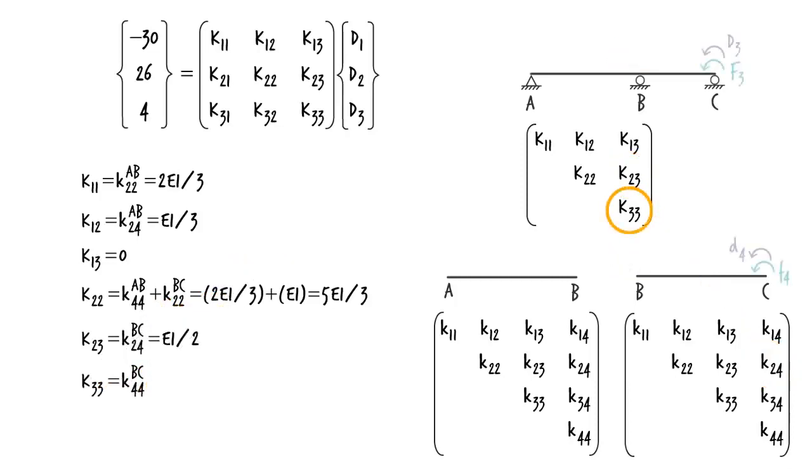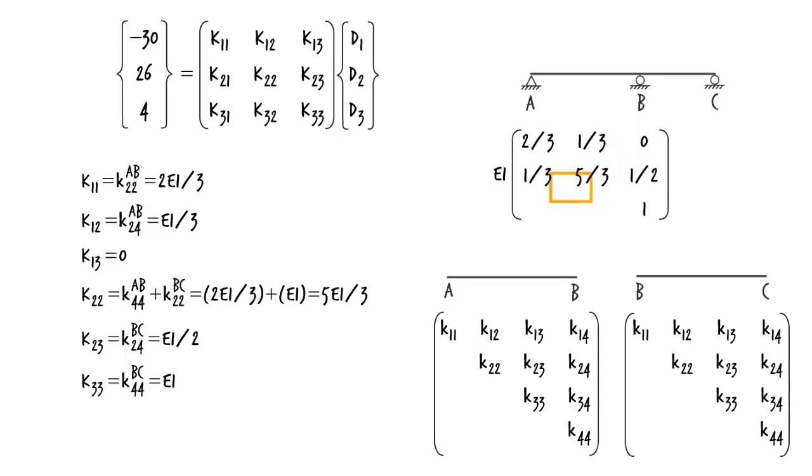And K33 equals K44 of BC, or EI. Therefore, the upper part of the matrix looks like this. Since stiffness matrices are always symmetrical, we can easily generate the lower part by transposing the upper part as follows. Our system of equations then becomes...